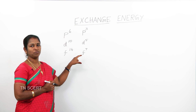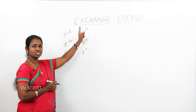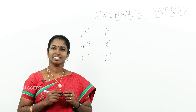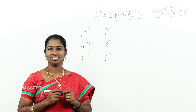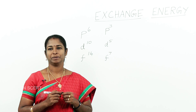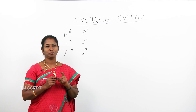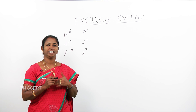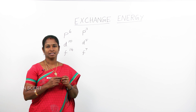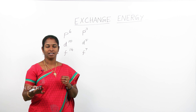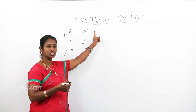One reason for this stability is exchange energy. If two or more electrons with the same spin are present in degenerate orbitals, there is a probability for them to exchange their positions. During this process, some energy is released and this energy is called exchange energy.